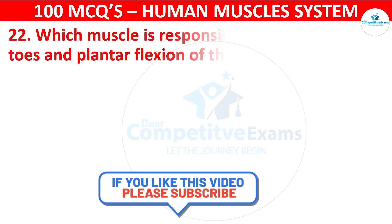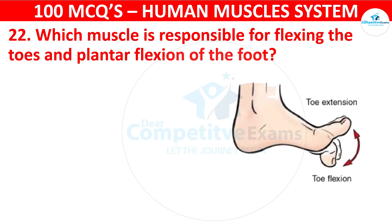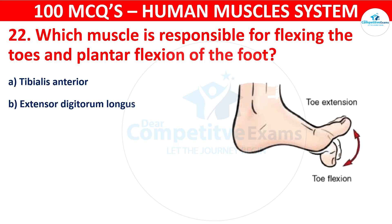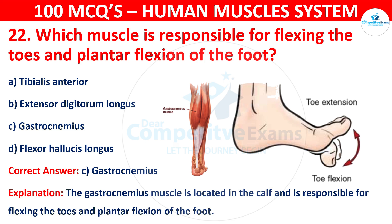Question number twenty-two: Which muscle is responsible for flexing the toes and plantar flexion of the foot? Your options are: Tibialis anterior, Extensor digitorum longus, Gastrocnemius, or Flexor hallucis longus. The correct answer is C, that is gastrocnemius. The gastrocnemius muscle is located in the calf and is responsible for flexing the toes and plantar flexion of the foot.